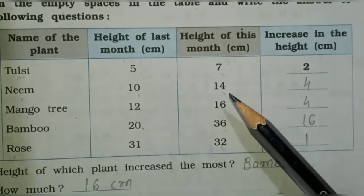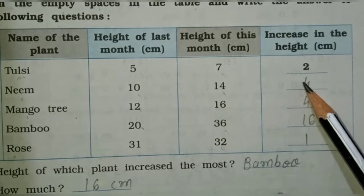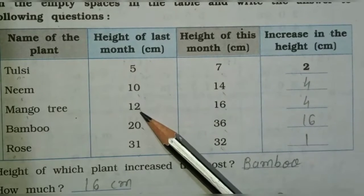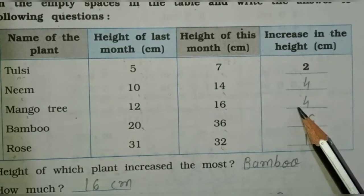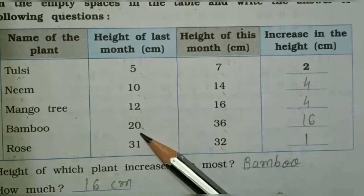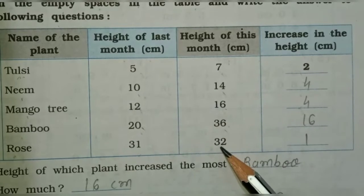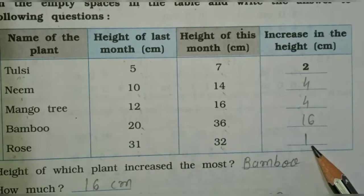Neem: 14 minus 10 is equal to 4 centimeters. Mango tree: 16 minus 12, so mango tree increased 4 centimeters. Bamboo: 36 minus 20 is equal to 16. And rose: 32 minus 31 is equal to 1 centimeter.